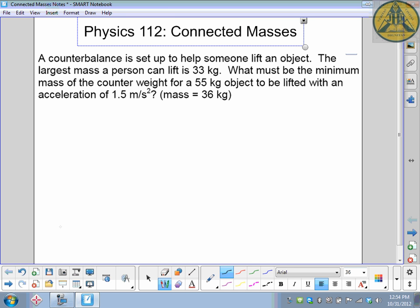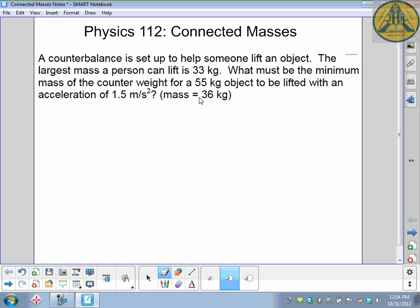What must be the minimum mass of the counterweight for a 55 kilogram object to be lifted with an acceleration of 1.5 meters per second squared? When we work it through, hopefully we'll get an answer of 36 kilograms.